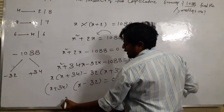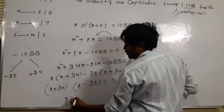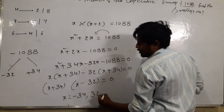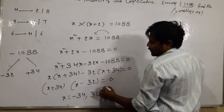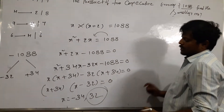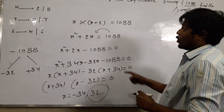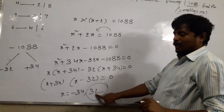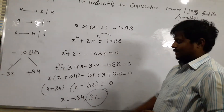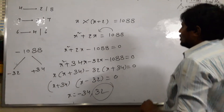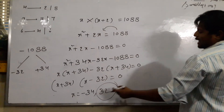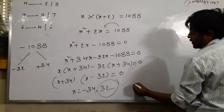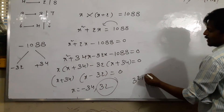What is the value of x? x equals minus 34, or x equals 32. Since we have positive numbers, we take x equals 32. The two numbers are x equals 32, and the next number x plus 2 equals 34. So the two numbers are 32 and 34.